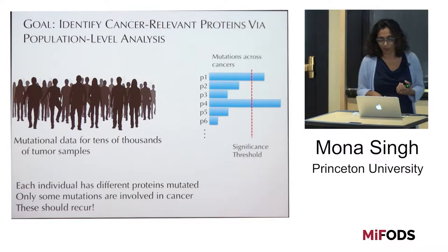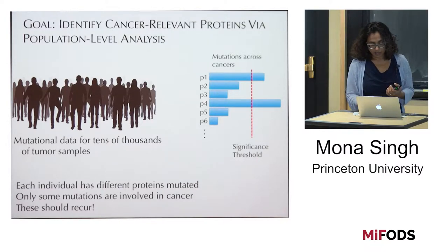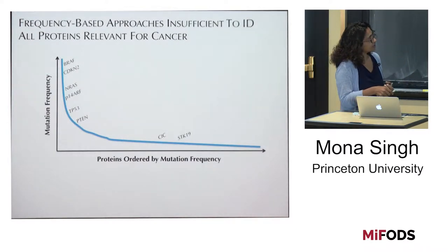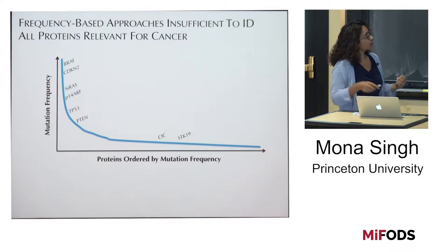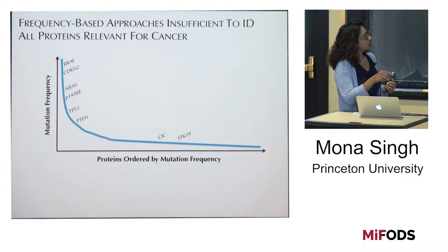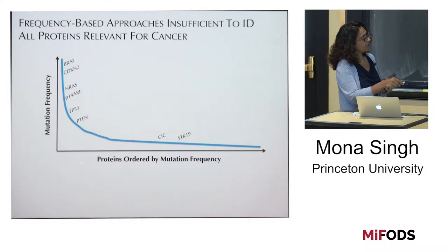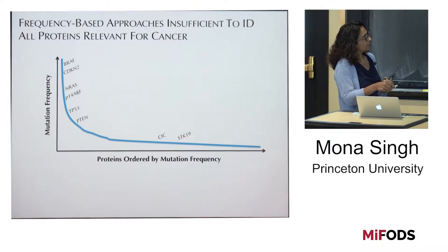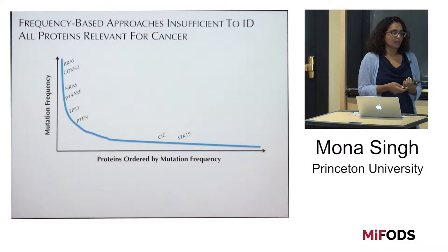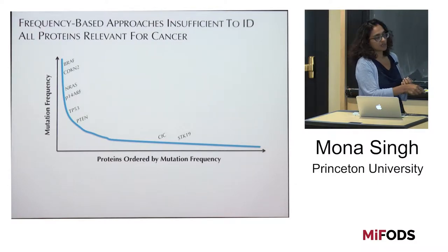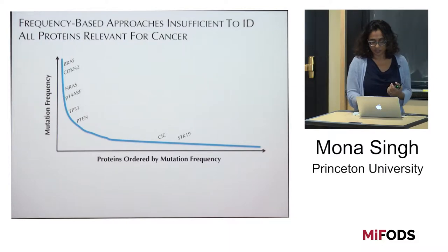The trick — which I'm somewhat obscuring — is figuring out how to set up the background probability. These methods certainly have some power, but they have weaknesses. If you order proteins by how frequently they're mutated across tumors, you see a distribution where some proteins are mutated with great frequency, but many are mutated at lower frequency. Some known cancer-relevant proteins are apparent in this top list, but even in this long tail there are still proteins that are cancer-relevant. So you can't just look at something as simple as mutation frequency.